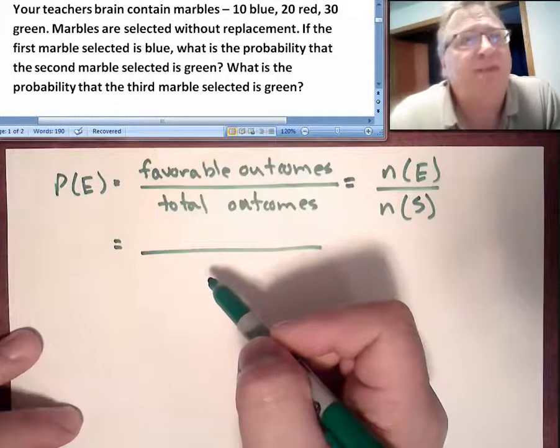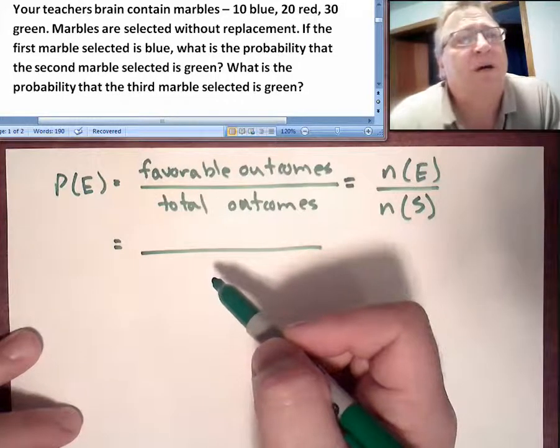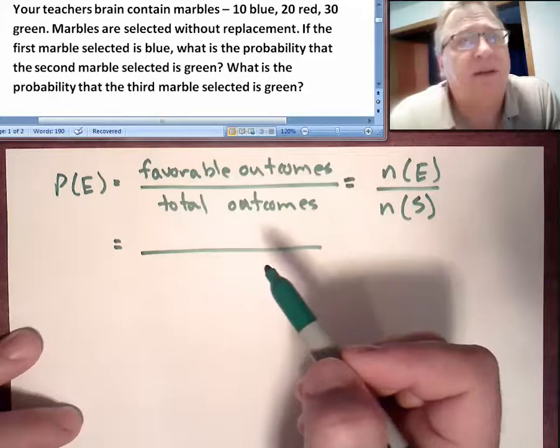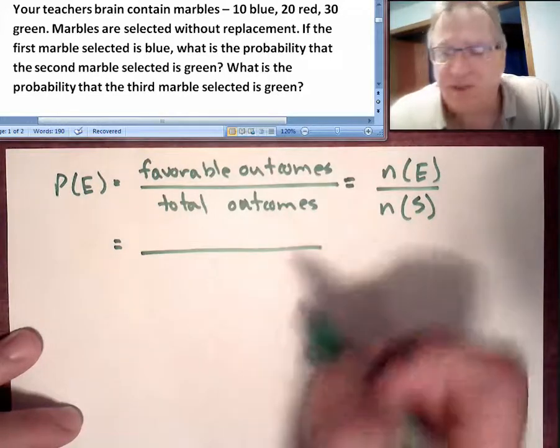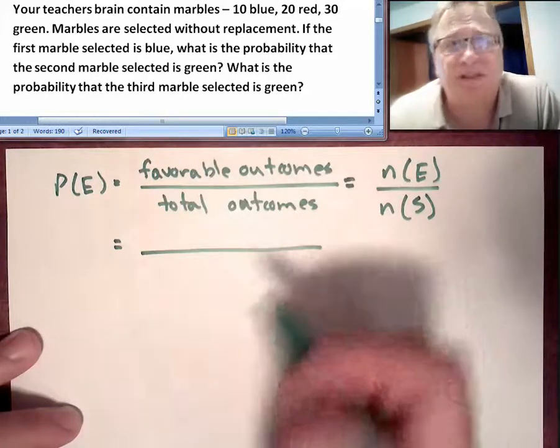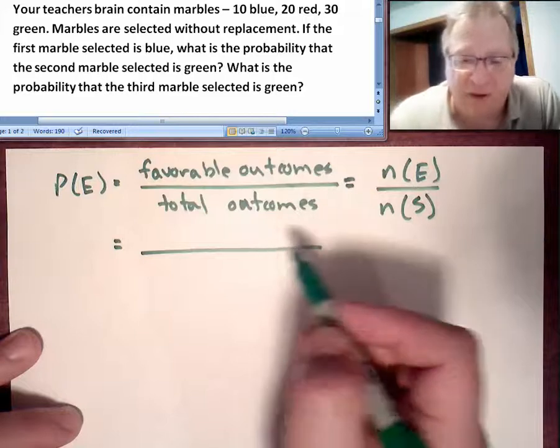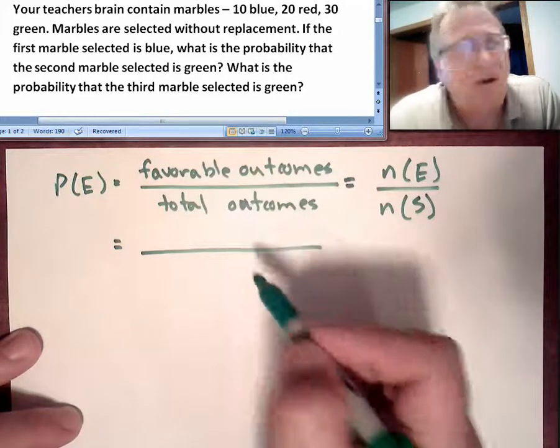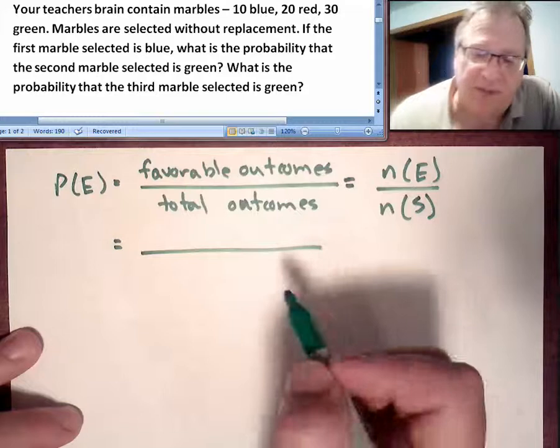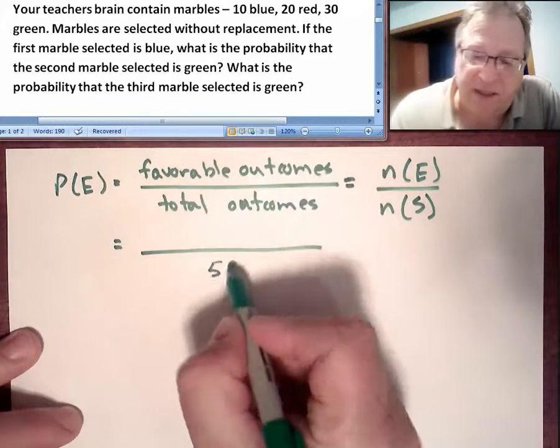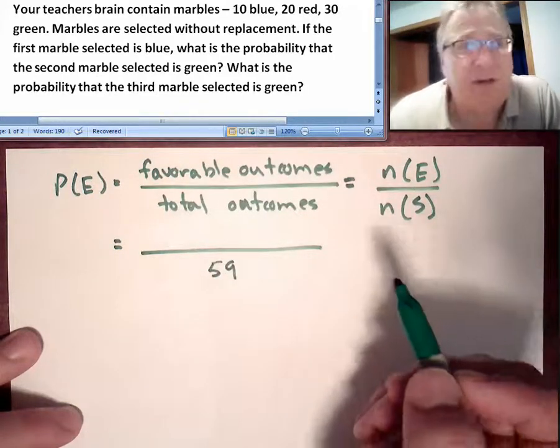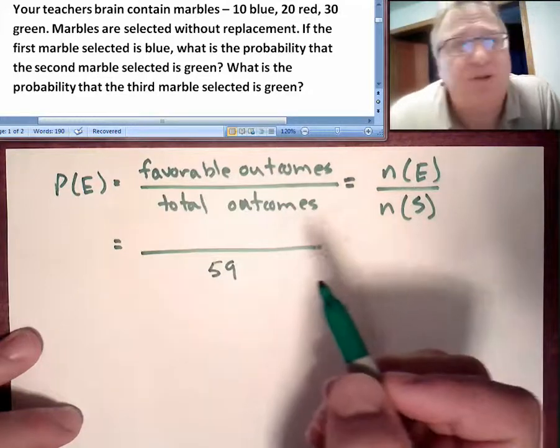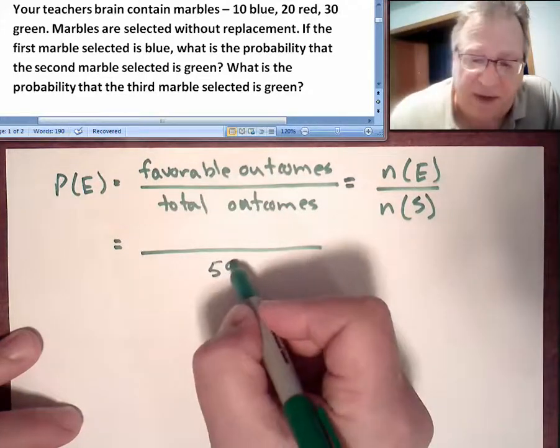However, by the time we get to the second draw, and that's what we're asked for, the first marble selected was blue. The first draw has already affected the second, hasn't it? Yes, because there's no longer 60 possible outcomes. There's only 59 possible outcomes. So by the time we get around to drawing that second marble, there's only 59 possible.